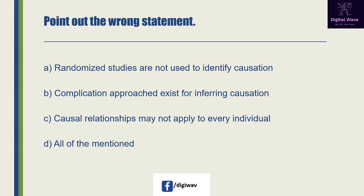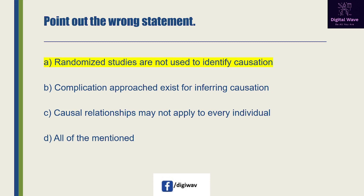Next question: point out the wrong statement. Option A is 'randomized studies are not used to identify causation', option B is 'a complication approach exists for inferring causation', option C is 'causal relationships may not apply to every individual', and the last option is all of the mentioned. The right answer will be A: randomized studies are not used to identify causation.